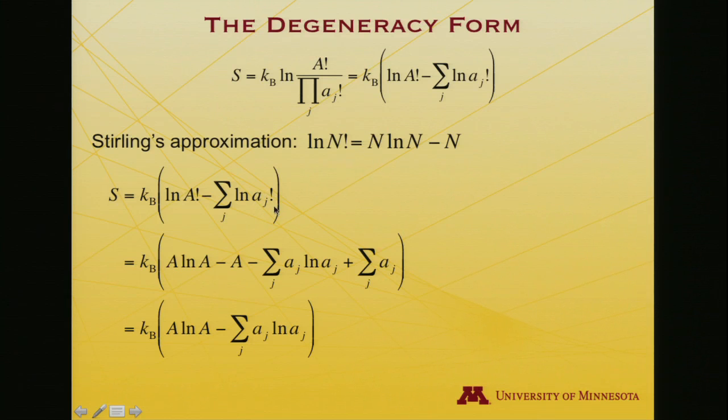Similarly, each of these little a_j factorials, I'll get an a log a, sum over all the j's, little a's. But what is the sum of all the little a's is capital A. That was the definition of capital A, the sum of all the little a's. And so those two terms drop out, and I'm left with this, Boltzmann's constant times this expression.